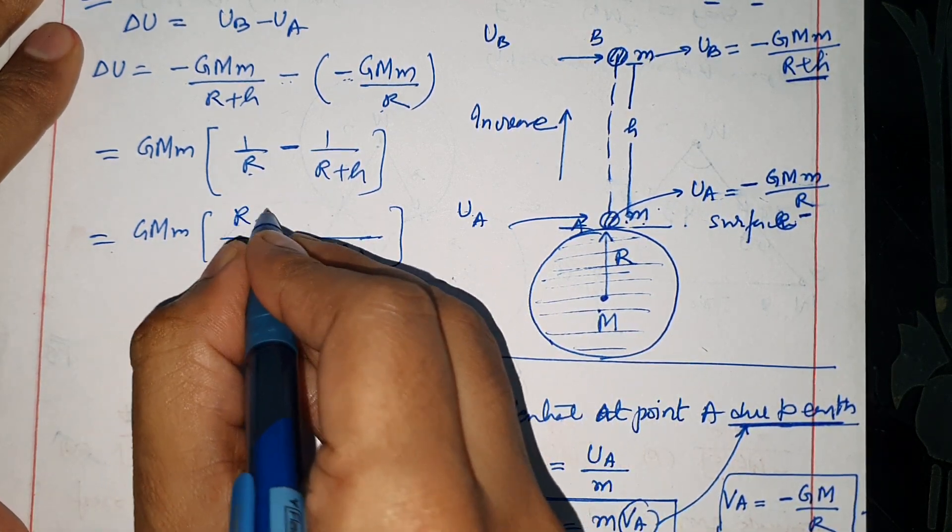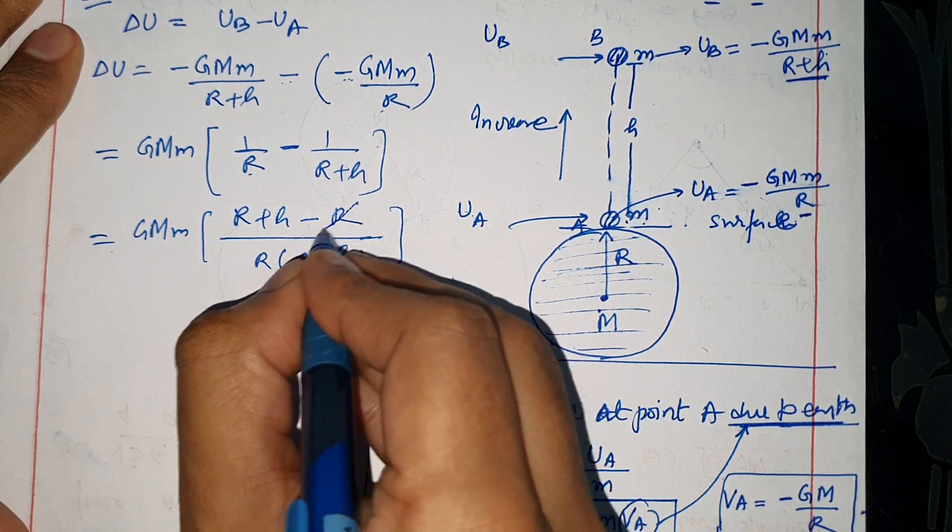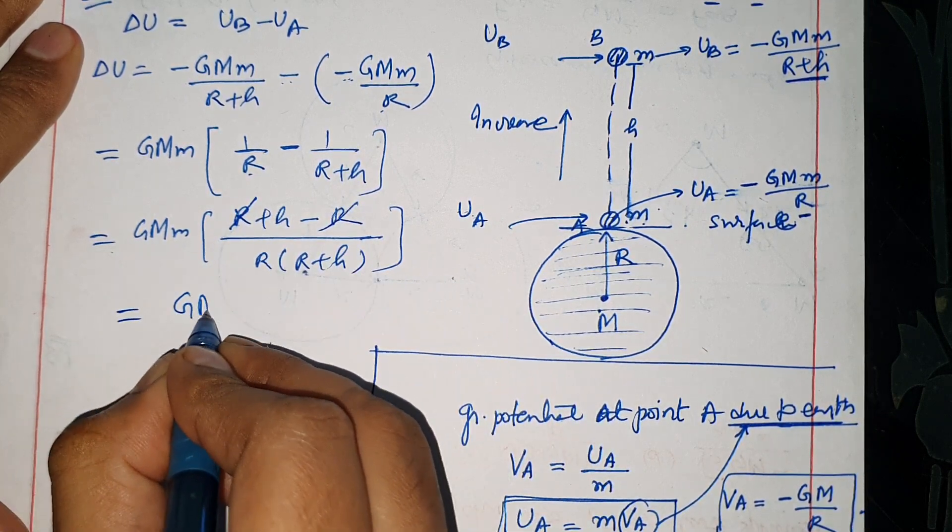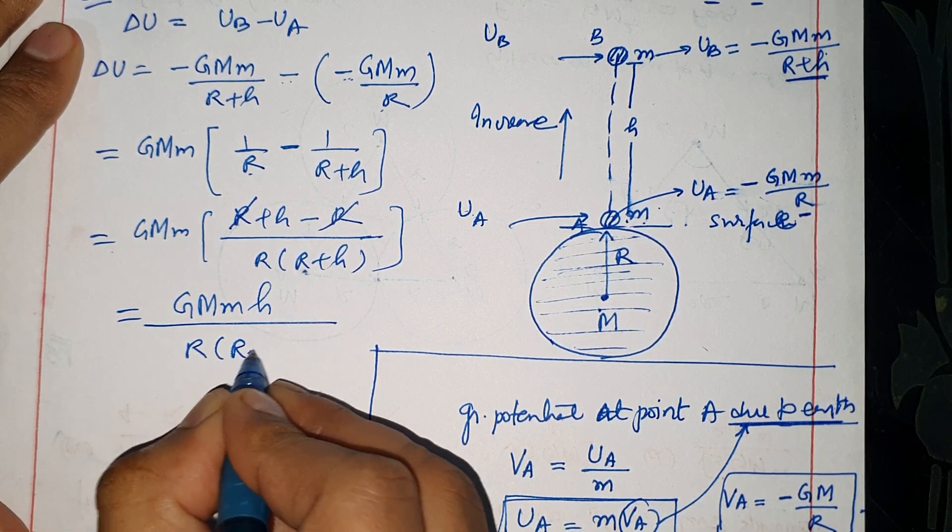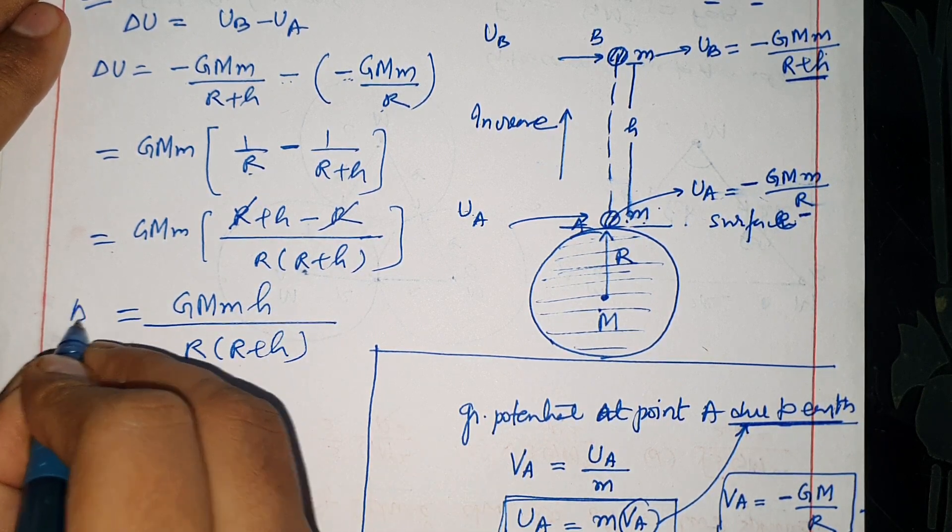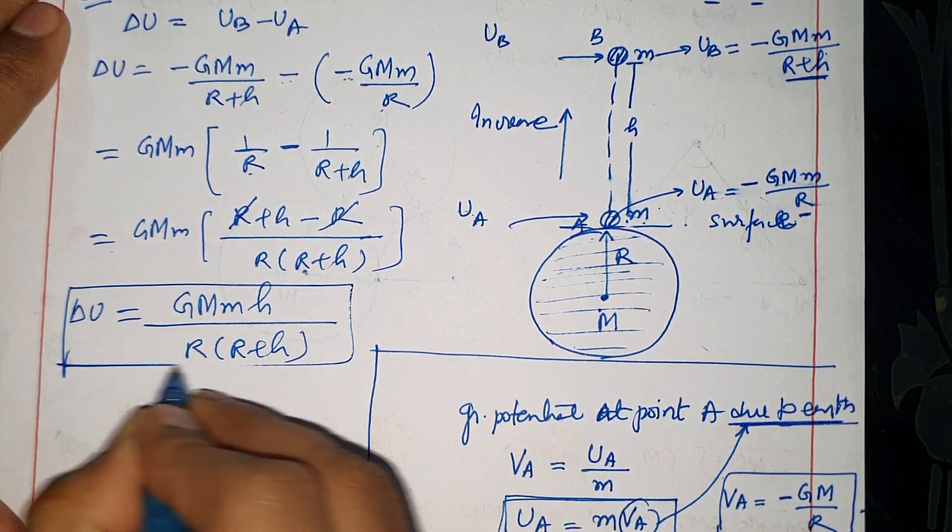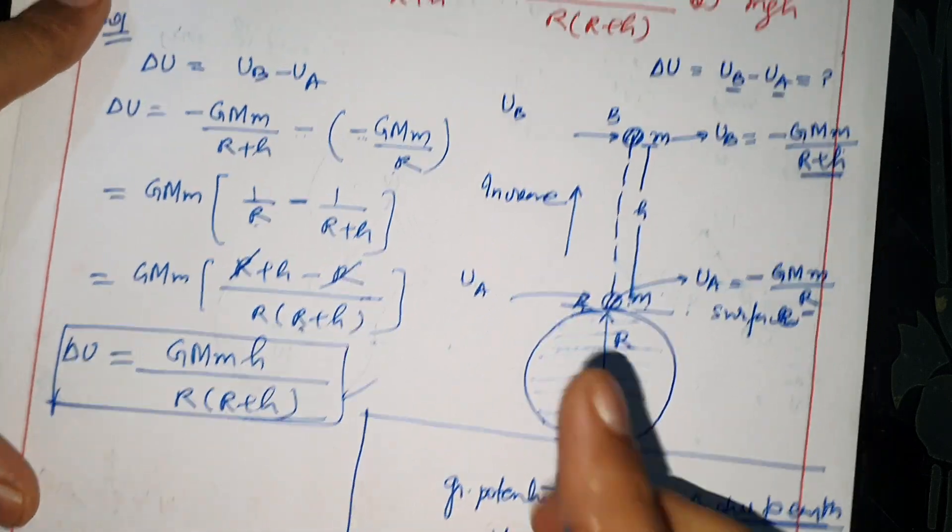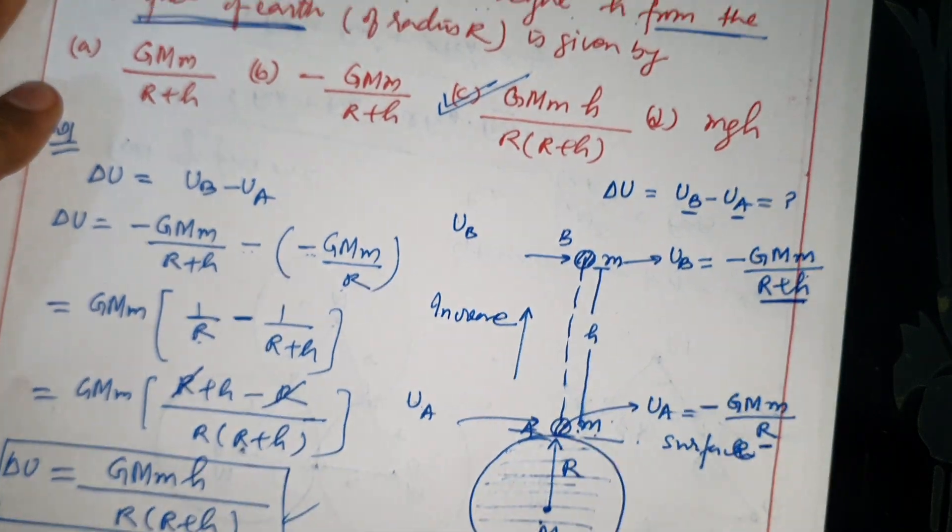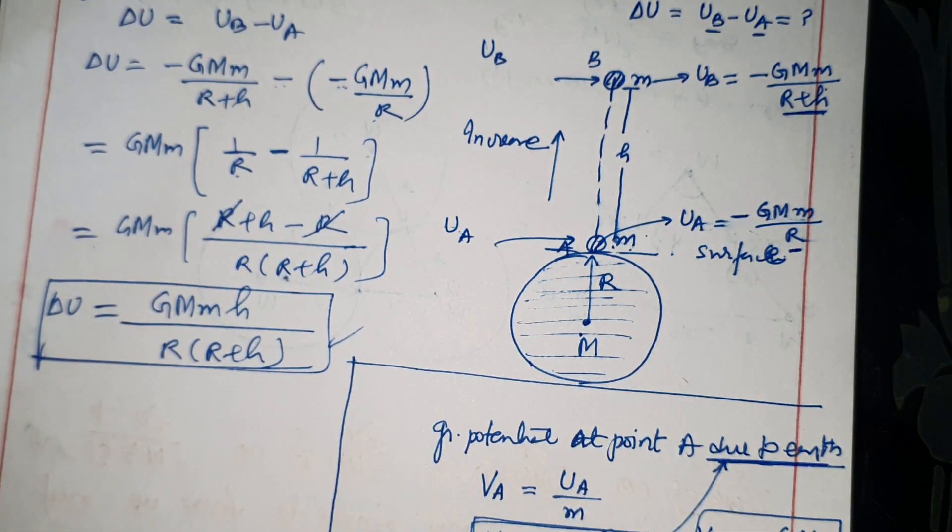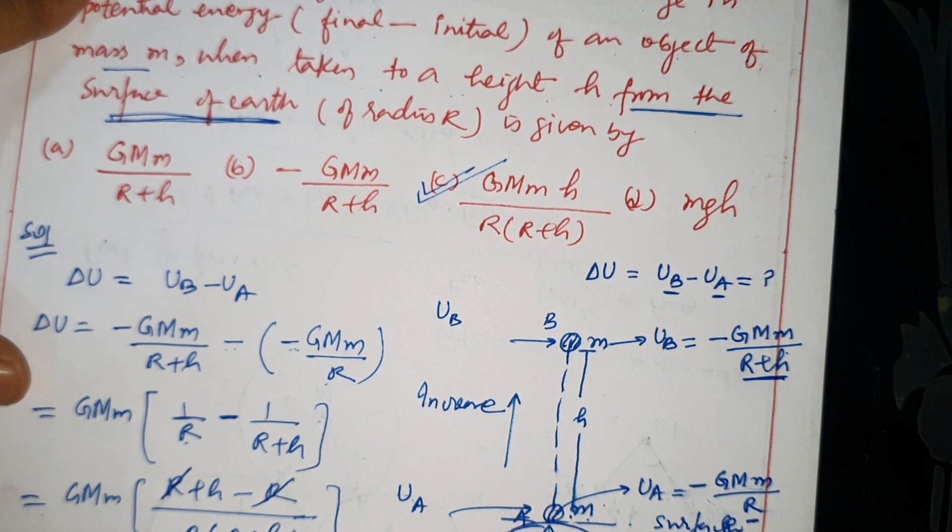Taking LCM of R and R plus h gives G capital M small m times h over R times R plus h. This is delta U, this is the answer: GMmh over R(R+h). The correct choice matches this.